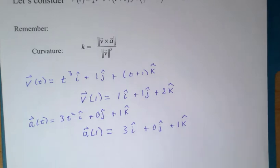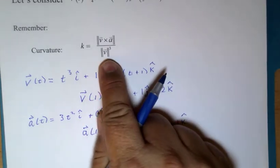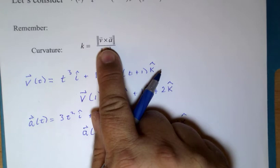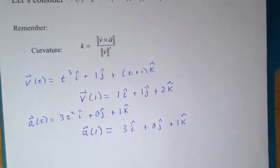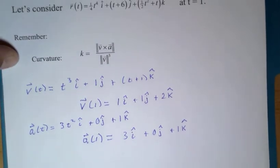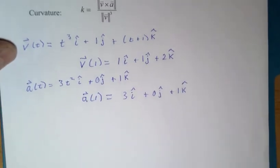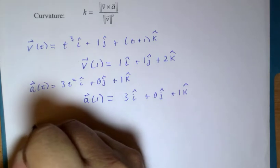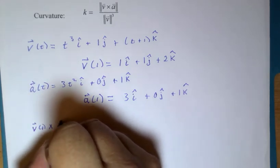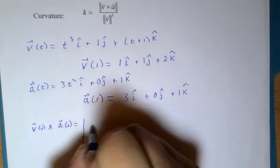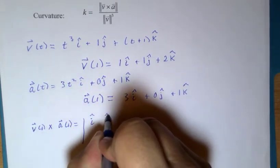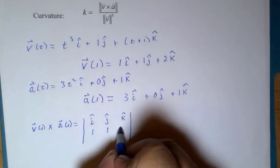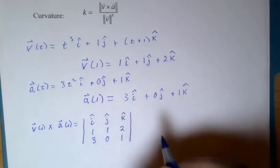I need to calculate the magnitude of the velocity vector. I need to perform the cross product of velocity and acceleration and then find its magnitude. So, that gives us a few pieces to compute. Let's see what I can do here. Sliding our paper up just a little bit. So, the velocity at time 1, cross product acceleration at time 1 will be i, j, k, 1, 1, 2, 3, 0, 1.